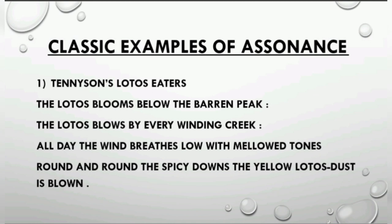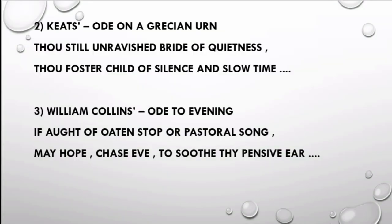The second example is from Keats' Ode on a Grecian Urn, where you can observe the recurrent long 'i' sound in its opening line: 'Thou still unravished bride of quietness, thou foster child of silence and slow time.' There is a repetition of the 'i' sound in still, unravished, quietness, child, silence, and time — giving us a beautiful, mellifluous, euphonic sound.